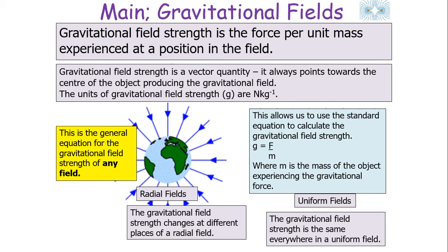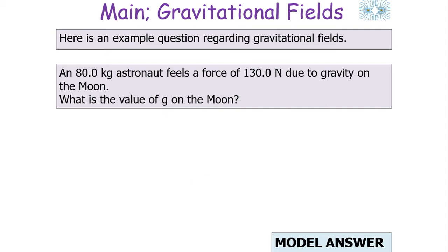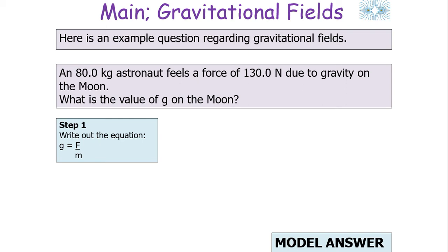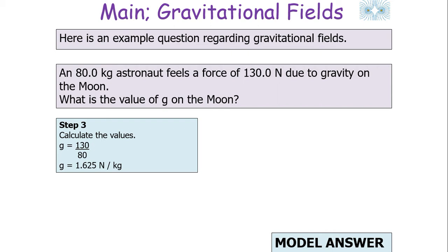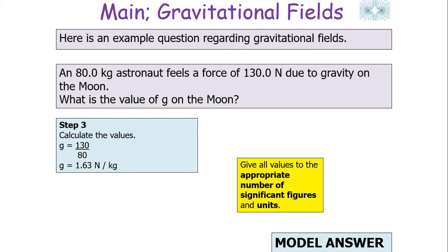This is the general equation for gravitational field strength in any situation. For example: an 80 kg astronaut feels a force of 130 N due to gravity on the Moon. What is the value of g on the Moon? Step one: write out the equation, g = F/m. Step two: place the values in — 130 over 80. Step three: calculate — you get 1.625 N/kg. Writing to three significant figures gives 1.63 newtons per kilogram.